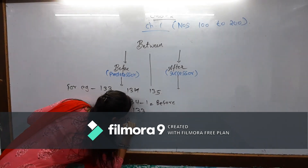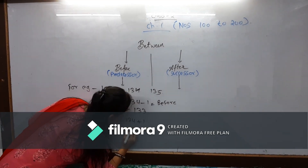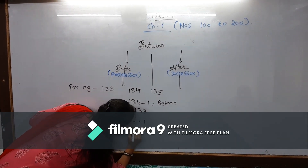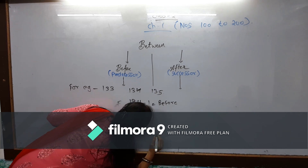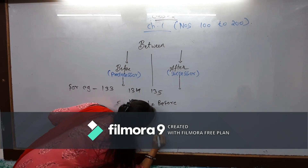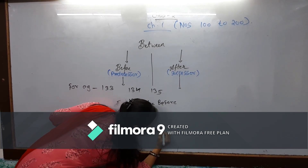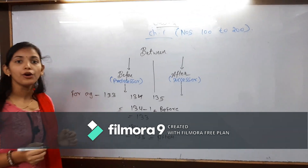For example, 134 — you can add one. So this is your successor. Successor means after. Have you got my point?